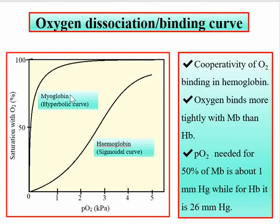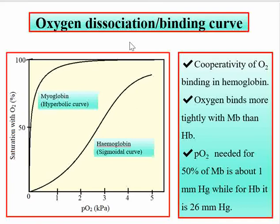Oxygen binds to myoglobin more tightly compared to hemoglobin. The partial pressure needed for 50% saturation of myoglobin with oxygen is around 1 mmHg, while for hemoglobin it is around 26 mmHg. This illustrates the difference in oxygen dissociation and binding between myoglobin and hemoglobin.